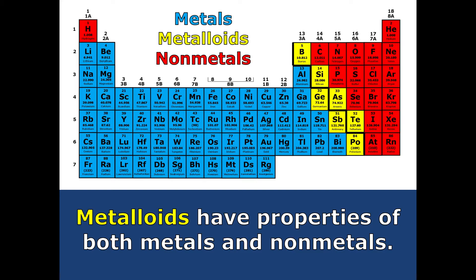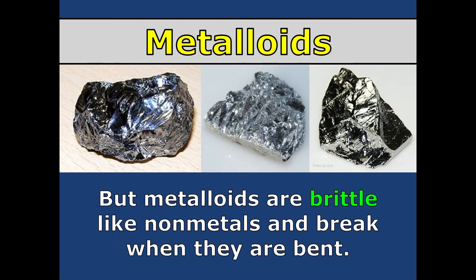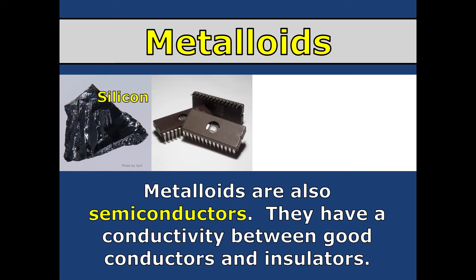Then we have metalloids, and they have properties of both. For example, they could be shiny — they could have metallic luster — but they can break; they're brittle. That's how you can get traits of both. Metalloids are semi-conductors. They have a conductivity between good conductors and insulators, so they're in between. That's why silicon is used in computers, on computer hardware, because they are semi-conductors and don't conduct heat and electricity as well — which is really important, because you want to keep the heat down in computers since they don't run well when they're too hot.